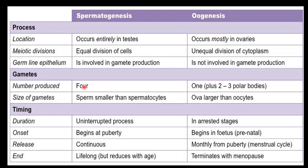The number of gametes produced in spermatogenesis is 4. In oogenesis, each follicle gives only 1 ovum — only 1 gamete plus 2 to 3 polar bodies. These polar bodies are very small and they disintegrate. Regarding size, the final product sperm is smaller than the spermatocyte, but in oogenesis the final product ovum is larger than the oocyte.